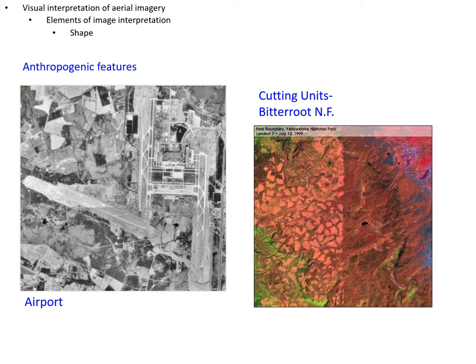I'm going to start with shape. On the left we're looking at anthropogenic features — it's an airport. You can tell it's an airport and not another kind of industrial plant because you can see runways and the roads leading up to them. You always need those roads to get back and forth to the actual runway, so you see that distinct cross-hatched pattern making it clear it's an airport.